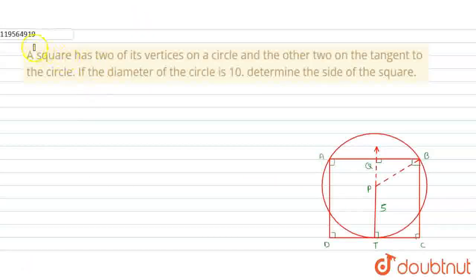Hello friends, now we are going to solve this question. A square has two of its vertices on a circle and the other two on the tangent to the circle. If the diameter of the circle is 10, determine the side of the square.